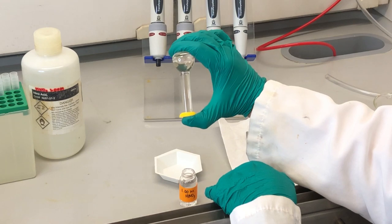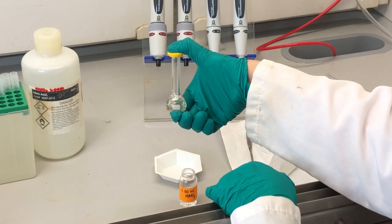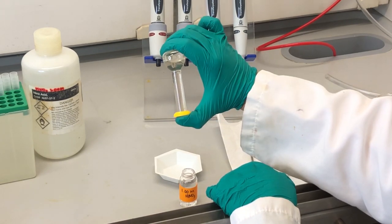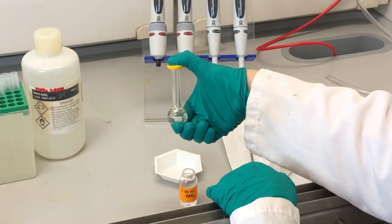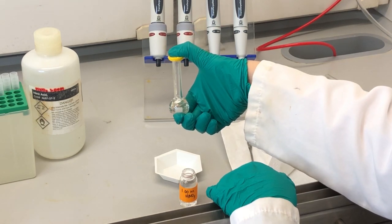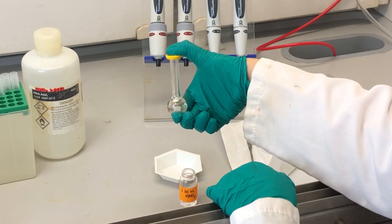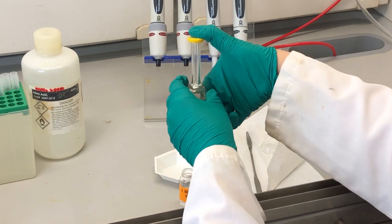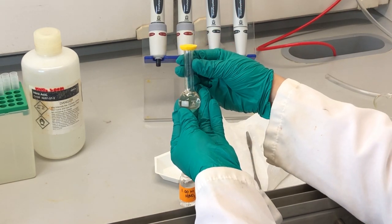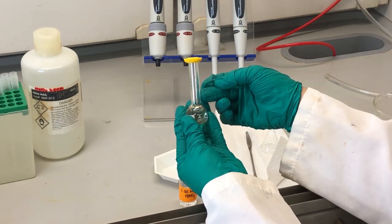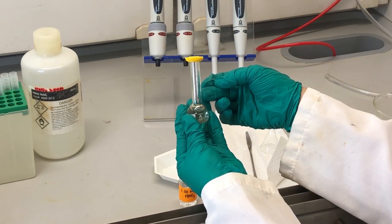We can stopper the flask with the yellow cap and with our thumb holding the top cap in place, invert the flask several times to make a homogeneous solution. Carefully fill the 10 ml volumetric flask to the mark located on the neck of the flask.